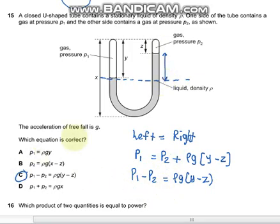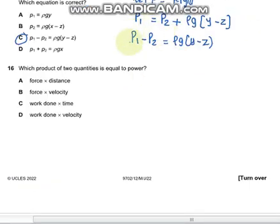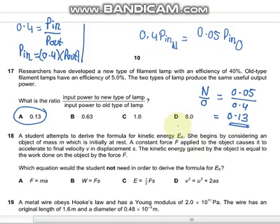Question 16 says which quantity equals power. Power is force times velocity, so B. Question 17 says filament lamps have the same useful output power. One, a new one, has an efficiency of 40%, and the old one has an efficiency of 5%. What is the ratio of the input power to the new lamp to the old lamp?